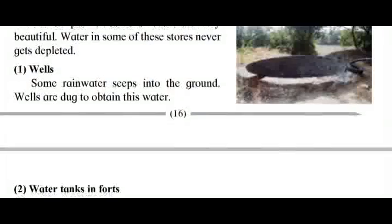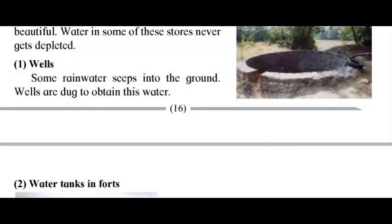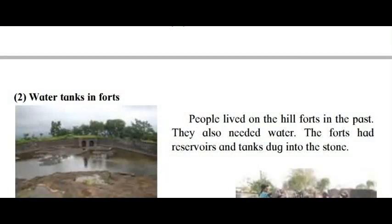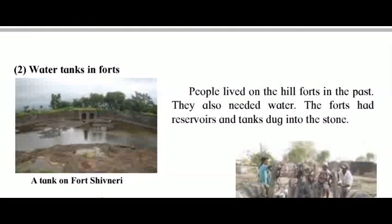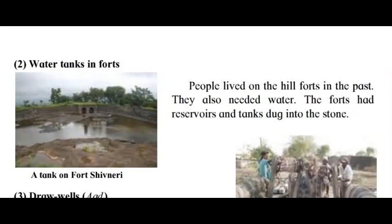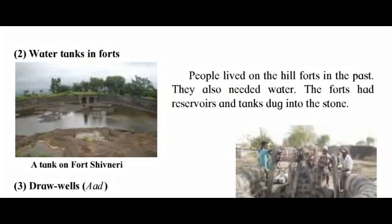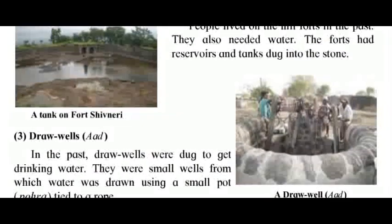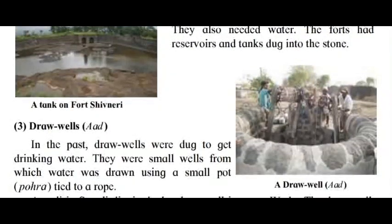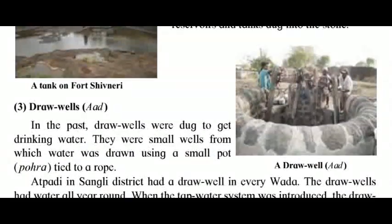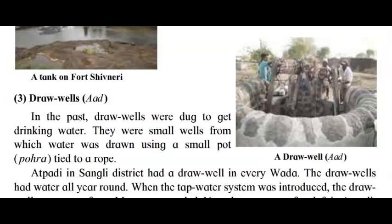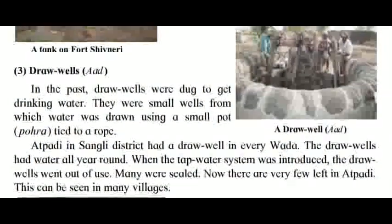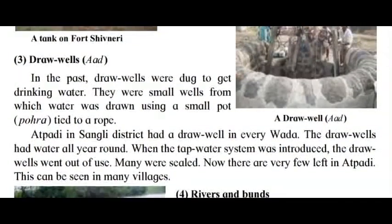One: Wells. Some rainwater seeps into the ground; wells are dug to obtain this water. Two: Water tanks in forts. People lived on the hill forts in the past and also needed water. The forts had reservoirs and tanks dug into the stone — for example, a tank on Fort Shivnery. Three: Draw wells. In the past, draw wells were dug to get drinking water. They were small wells from which water was drawn using a small pot (pohara) tied to a rope.